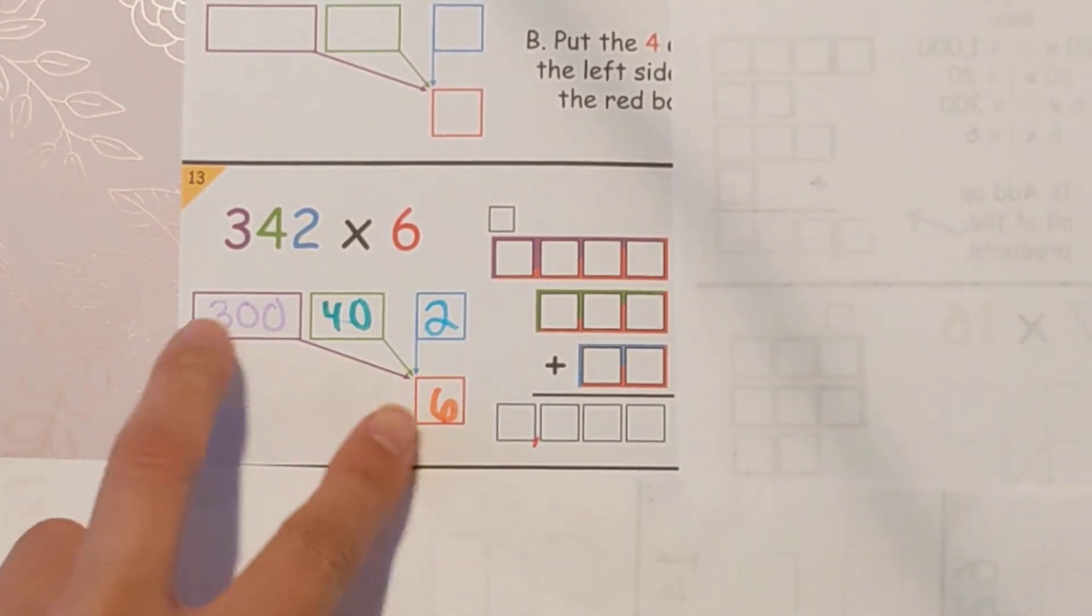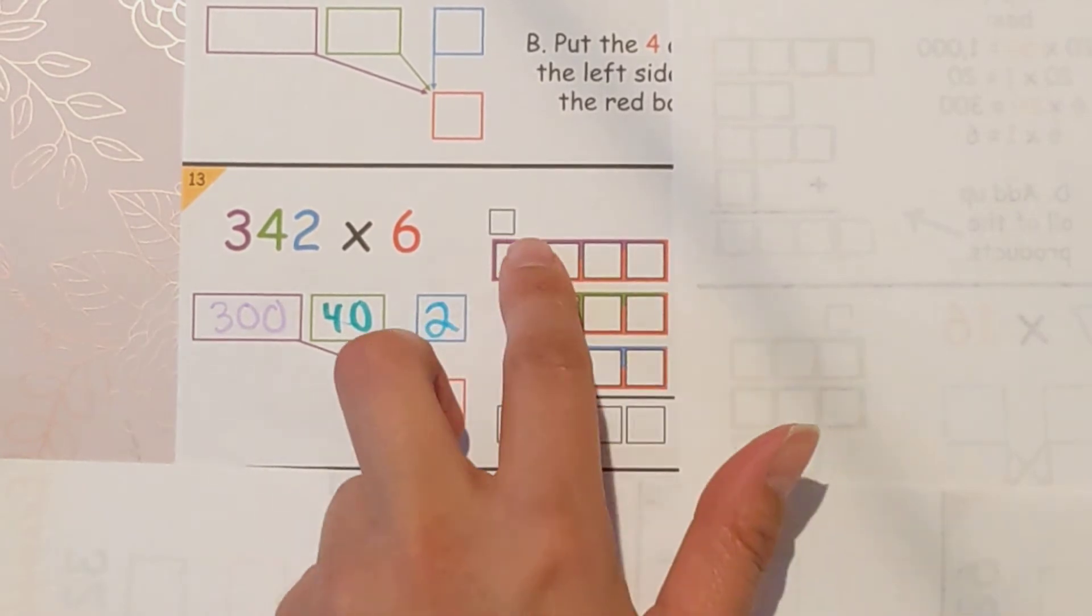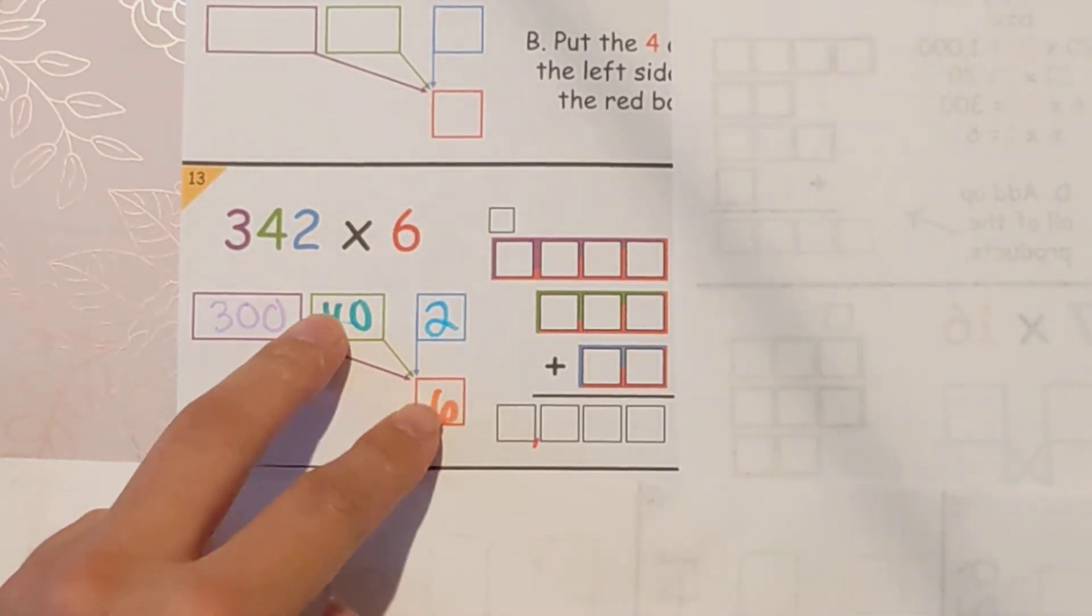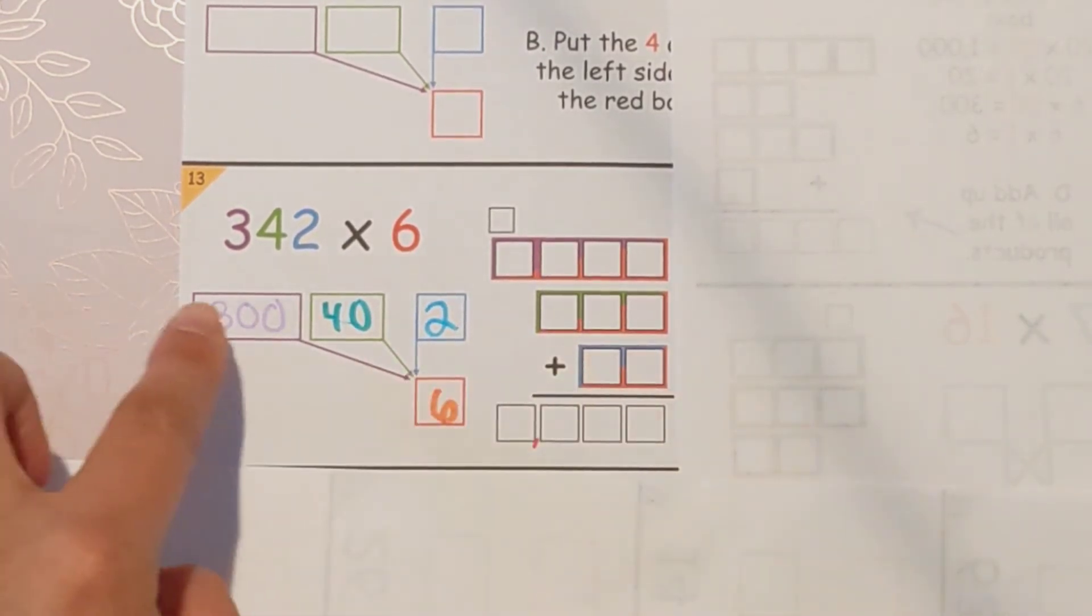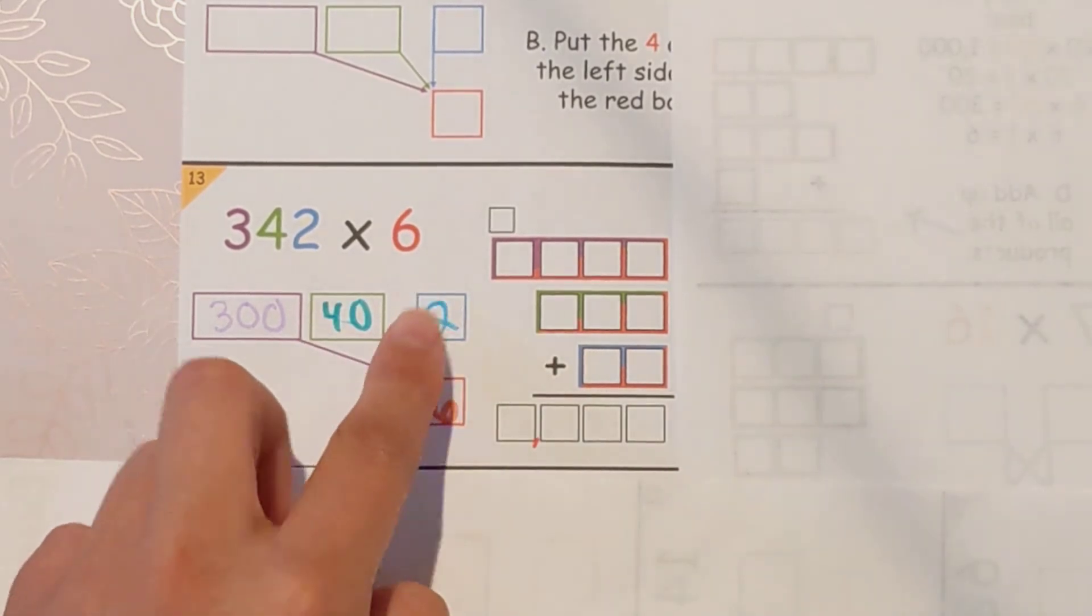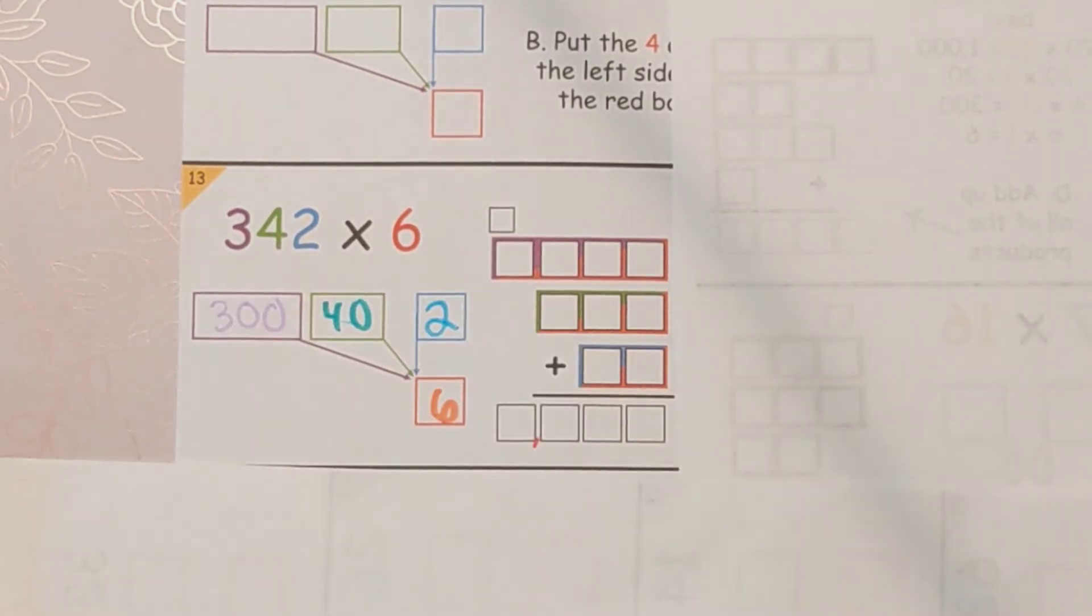You're going to put that in this box, and this is the purple and red box. Then you're doing 40 times six, and you're going to put that here. And then you'll do two times six. So you're just doing one part at a time, and then at the end, you add it all together.